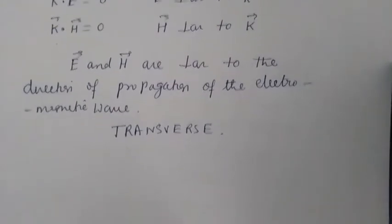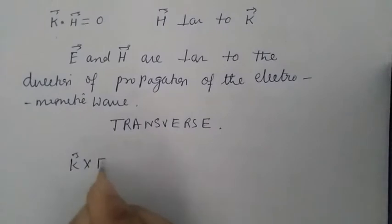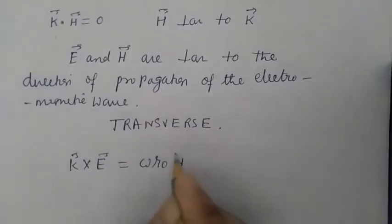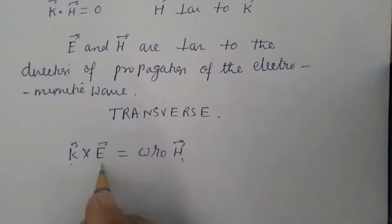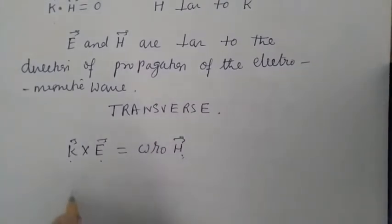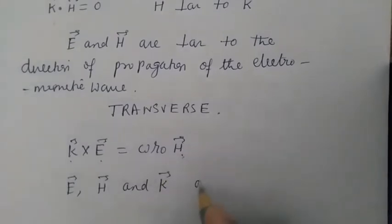From equation D, we have k×E = ωμ₀H. This means that vector H is perpendicular to both k and E. So from here, we can conclude that E, H, and k are orthogonal.